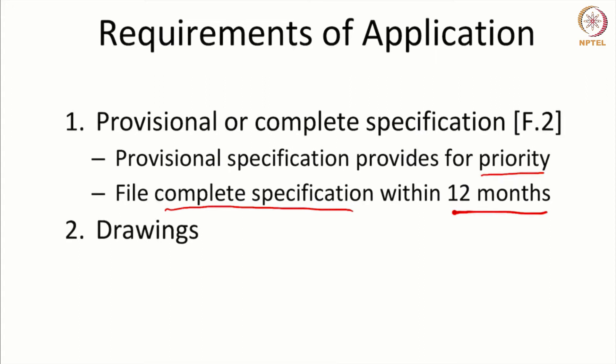The second requirement while filing an application is the requirement of drawings. You need to have drawings if your invention can be described through drawings. For instance, most mechanical inventions — inventions involving mechanical and moving parts — may require drawings. Even if you do not file the drawings, the patent controller can ask for drawings when the patent office is prosecuting your patent application.